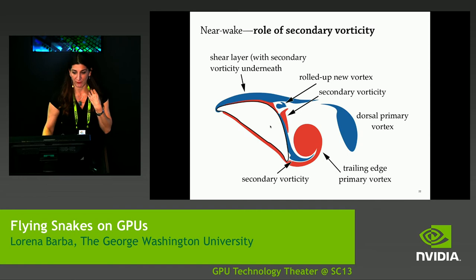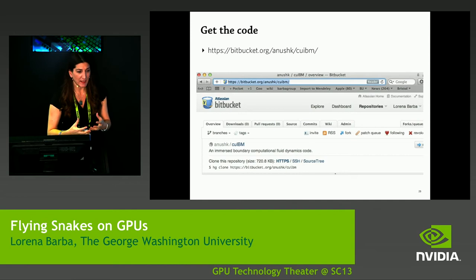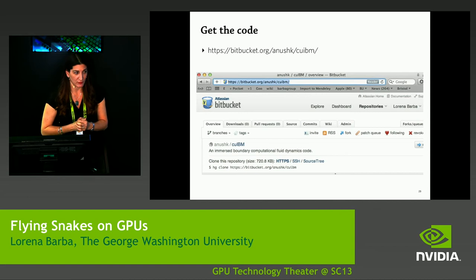I wanted to tell you about the physics of this rather than the code, but of course if you're interested, you can get the code. Everything is open source. The code can be downloaded and not only inspected, but you can actually run the experiments reported in this article. If you go to our website, you'll find links to where the data sets are available to download so you can run the code and reproduce these very same results. We have a policy of open science and open source in our group so that everything can be reproduced.